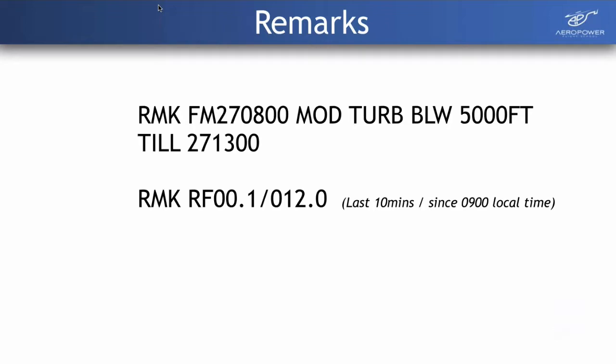In the remarks section, you might also see moderate turbulence noted with a time when it's expected to lift. For rainfall, you may see RF followed by two numbers: the first is rainfall in the last 10 minutes when the forecast or observation was made, and the second is rainfall since 9 o'clock local time that day.